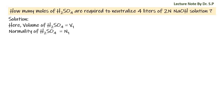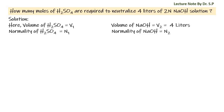Let us consider the volume of sulfuric acid is V1 and the normality of sulfuric acid is N1. Both the volume and normality of sulfuric acid are not given in the question — we have to find them ourselves. We can assume the volume of sodium hydroxide solution is V2, with a given volume of 4 liters, and the normality of sodium hydroxide solution is N2, with a given normality of 2N.